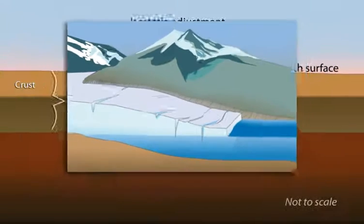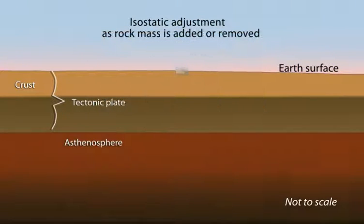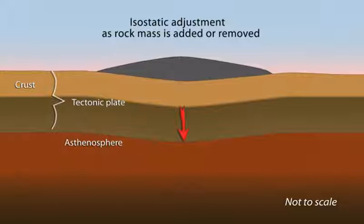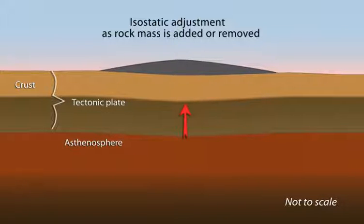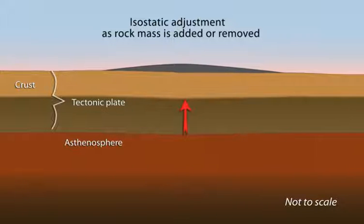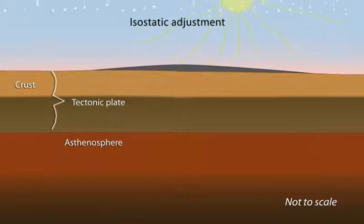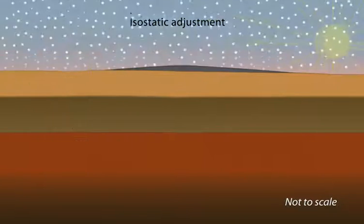Zooming out, glaciers lie upon tectonic plates that maintain a buoyant equilibrium with the asthenosphere. When mass is added to or removed from the Earth's surface, the adjustment of the tectonic plates results in small changes in the elevation of the Earth's surface. This process is called isostatic adjustment.